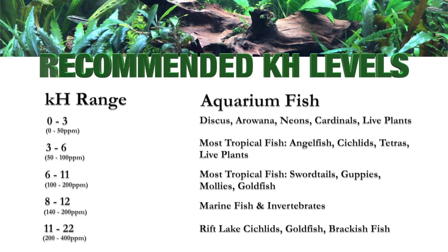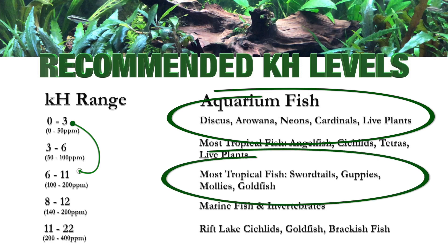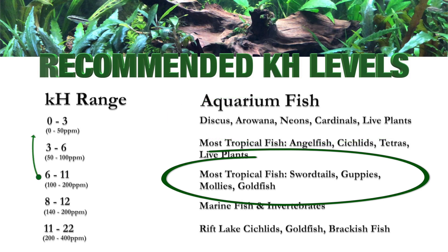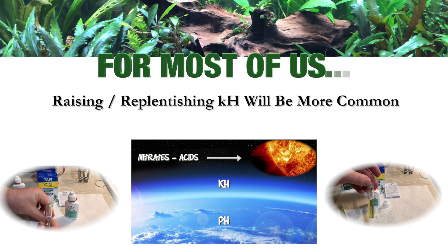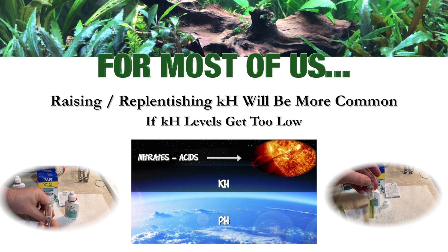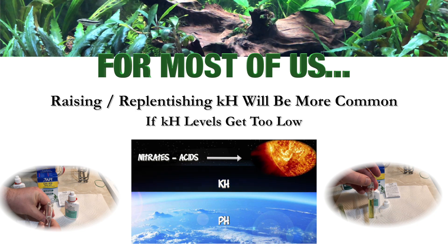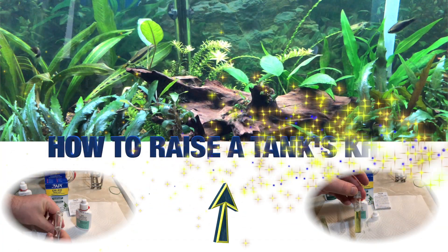Why would we want to raise or lower our KH? It's so that we can raise or lower our pH. Maybe we're keeping fish such as neons or cardinals and we want to keep swordtails or guppies — we need to raise our pH and in order to do that we have to raise our KH. Or maybe we're already keeping livebearers such as swordtails or guppies and want to keep neons or cardinals — we need to lower our pH and to do that we need to lower our KH. For most of us, raising or replenishing KH will be much more common if KH levels get a little too low.